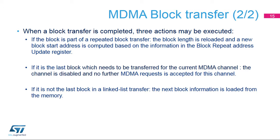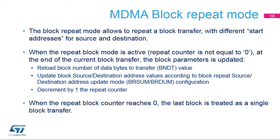If it is the last block to be transferred for the current MDMA channel (MDMA-CX-LAR equals zero), the channel is disabled and no further MDMA requests will be accepted for this channel. The block repeat mode allows repetition of a block transfer with different start addresses for source and destination. When repeat block mode is active, the repeat counter is not equal to zero. At the end of the current block transfer, the block parameters are updated: the BNDT value reloaded and the SAR/DAR values updated according to BRSUM/BRDUM configuration, and the repeat counter is decremented by one. When the repeat block counter reaches zero, the last block is treated as a single block transfer.